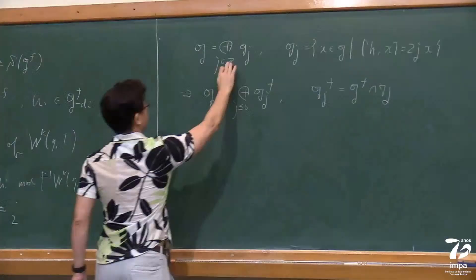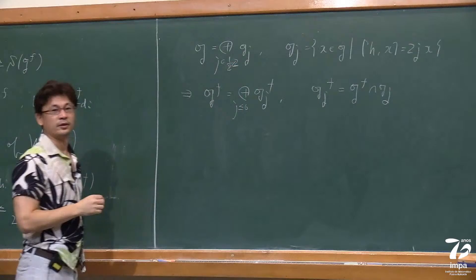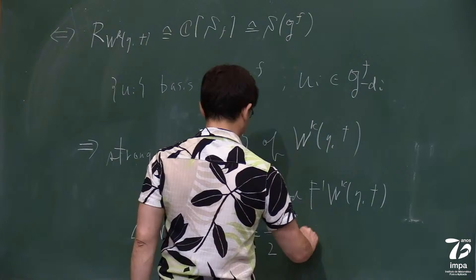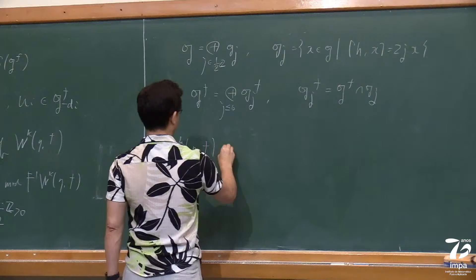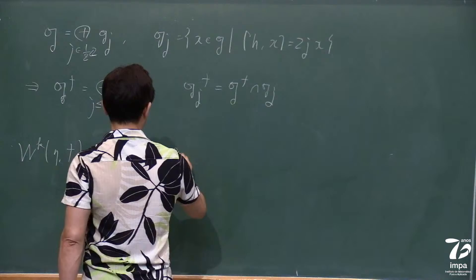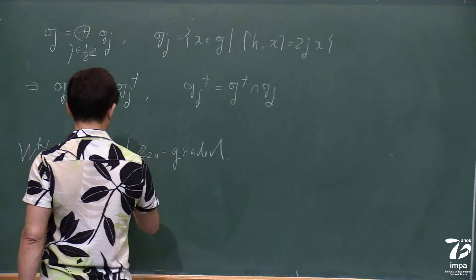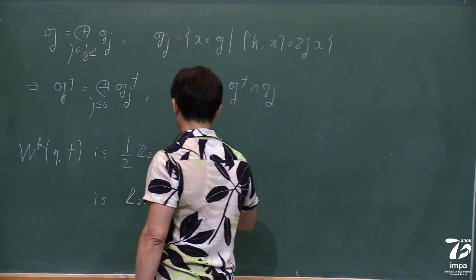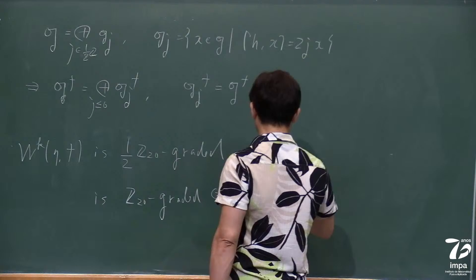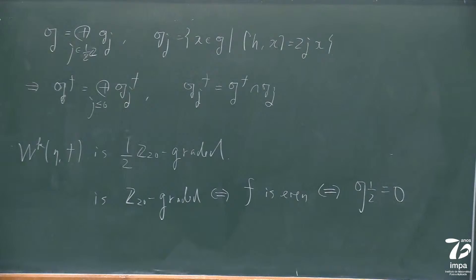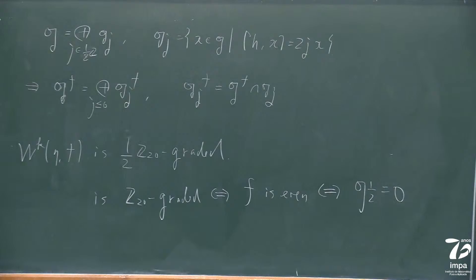This conformal weight is positive, but it's not an integer — it's a half-integer grade, because I normalized as 2j. So the W-algebra is half-integer graded in general, but sometimes Z-graded. If the nilpotent element is even — namely only integer indices appear — which only happens when G_{1/2} equals zero, the W-algebra is Z-graded. Otherwise it is in general half-integer graded.